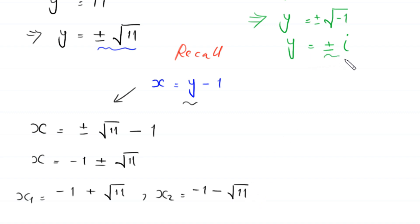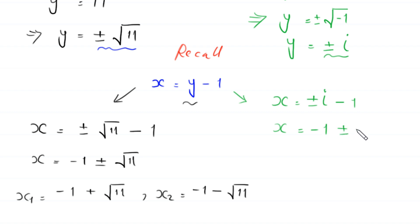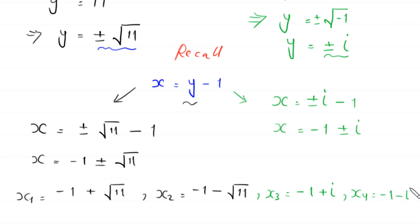When y equals plus or minus i, then x equals plus or minus i minus 1, which is x equals negative 1 plus or minus i. This gives us x₃ equals negative 1 plus i and x₄ equals negative 1 minus i. So we have four solutions to this equation.